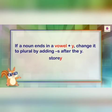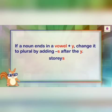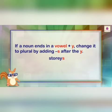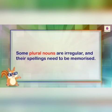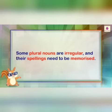Now, if a noun ends in a vowel plus Y, then we change to the plural form by simply adding S after the Y. So if we have a noun with a consonant and Y, we use IES. But if we have a noun with a vowel and Y, we just add S.